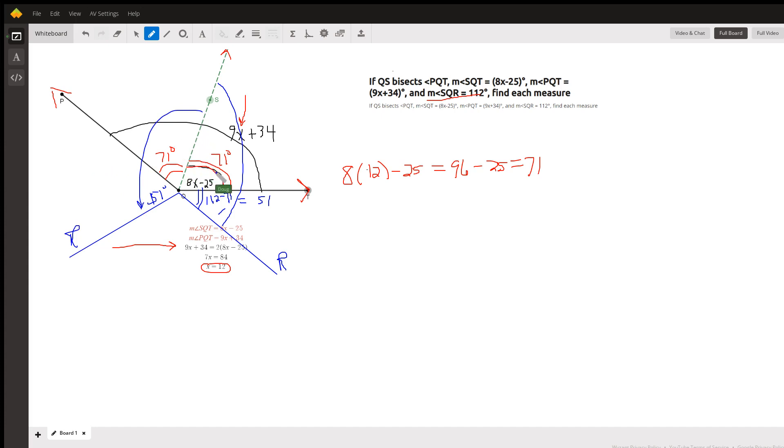Whoops, no, I didn't do that right. 112 minus 71 is 41. There you go. Hope that helped. If you have any questions, post a comment.